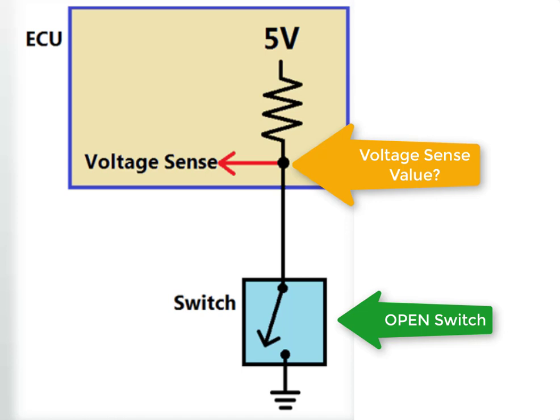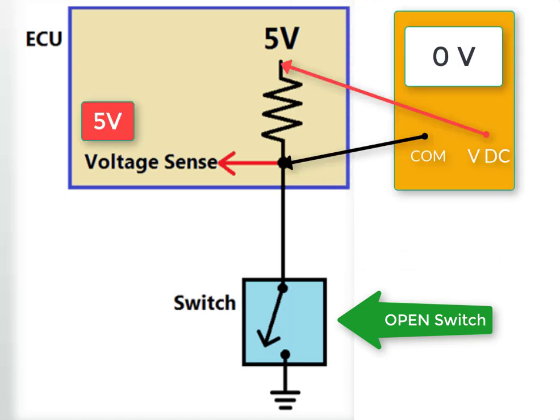Hopefully you took time to think about what the voltage sense would read. The voltage sense in this example, with the circuit in the open position, would read 5 volts. The reason it's reading 5 volts is that the 5 volts is not dropping at the resistor. The 5 volts is not dropping at the resistor because current is not flowing through this circuit. The switch in the open position is preventing current from flowing through the circuit.